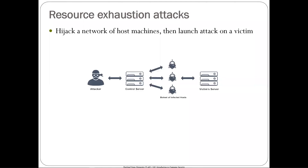When we bring it back to the CIA principles, this is clearly an attack on availability. The idea of a distributed denial of service attack is to hijack a network of host machines and then use that network to launch an attack on a victim. What you'd want to do as an attacker is basically extort the victim — pay me money in Bitcoin, otherwise I'm going to point all of my bots to your site and wreck your business.